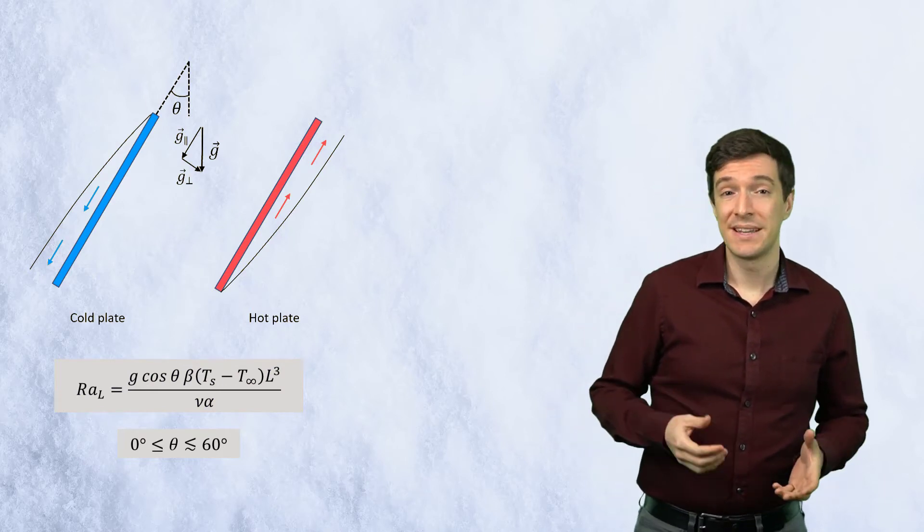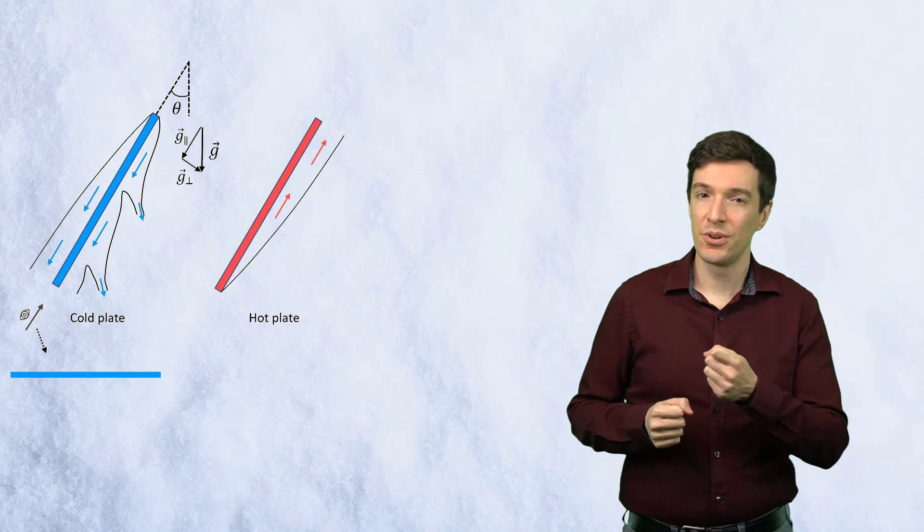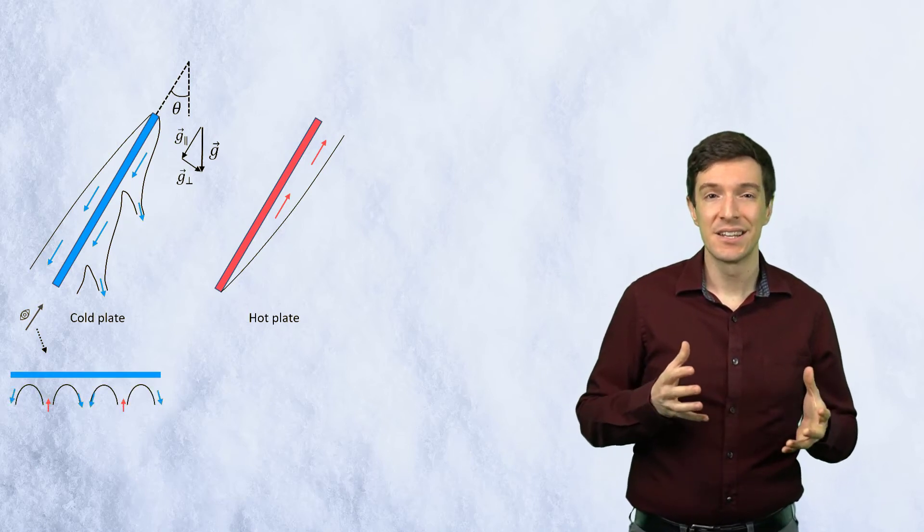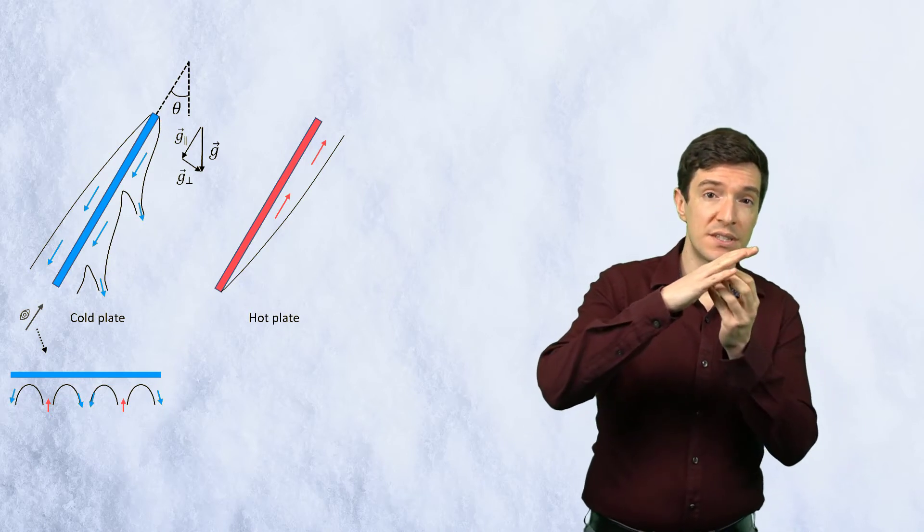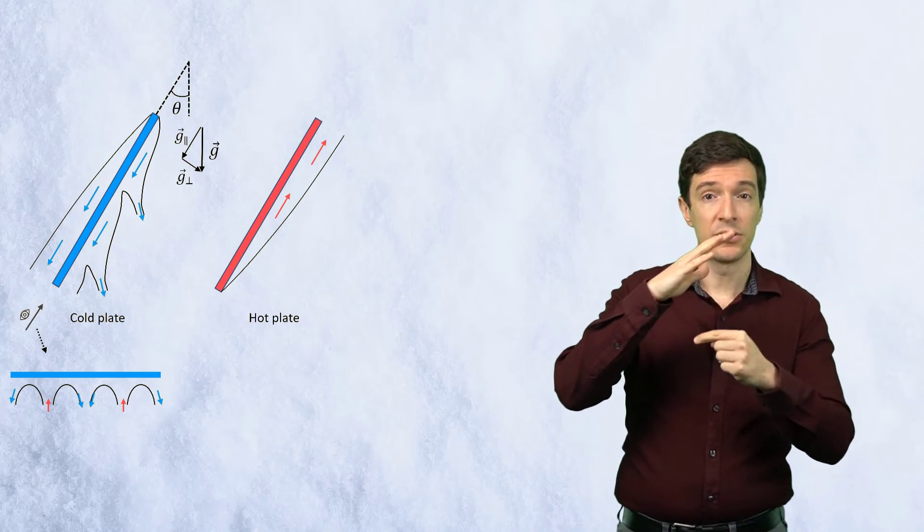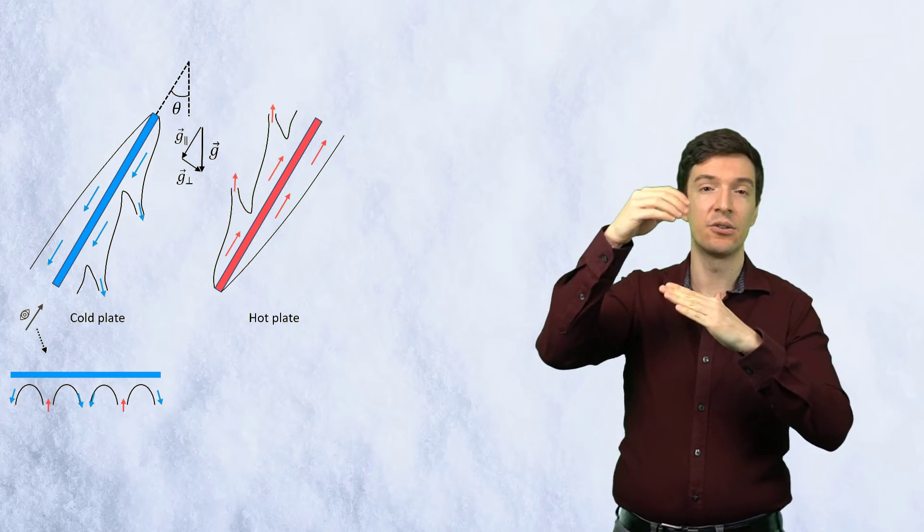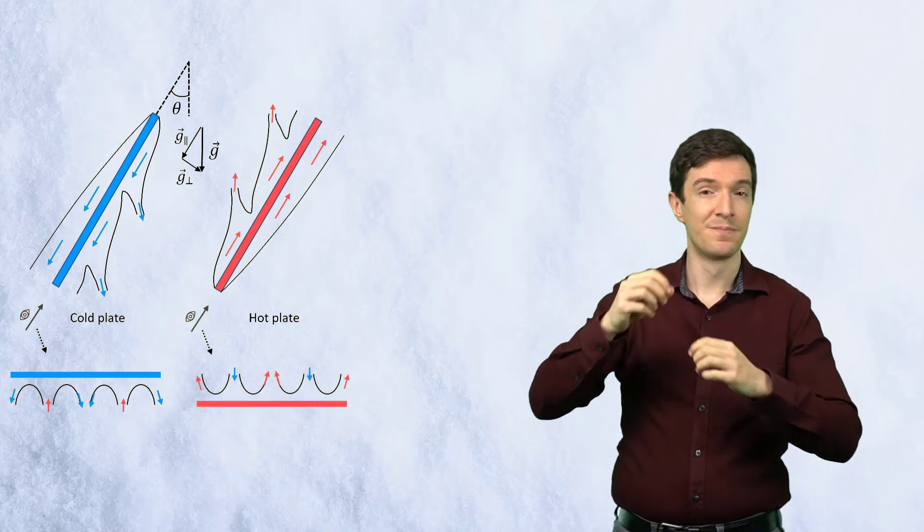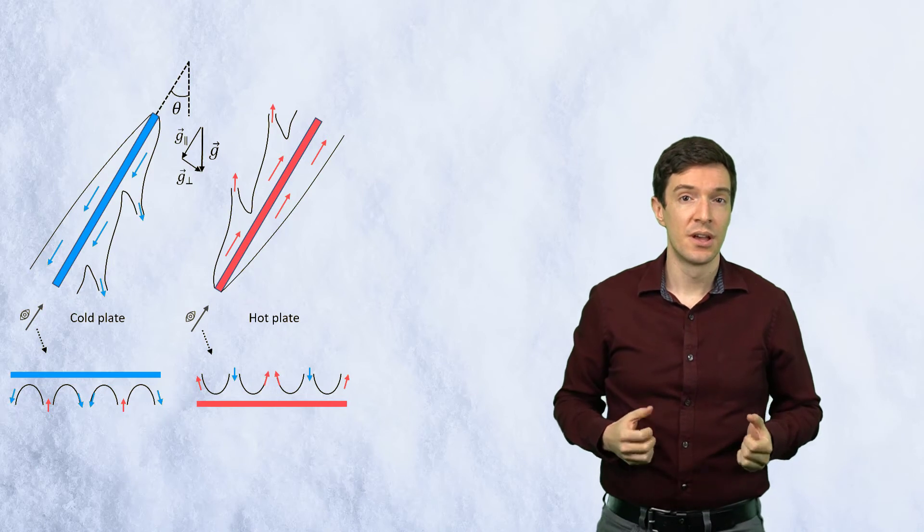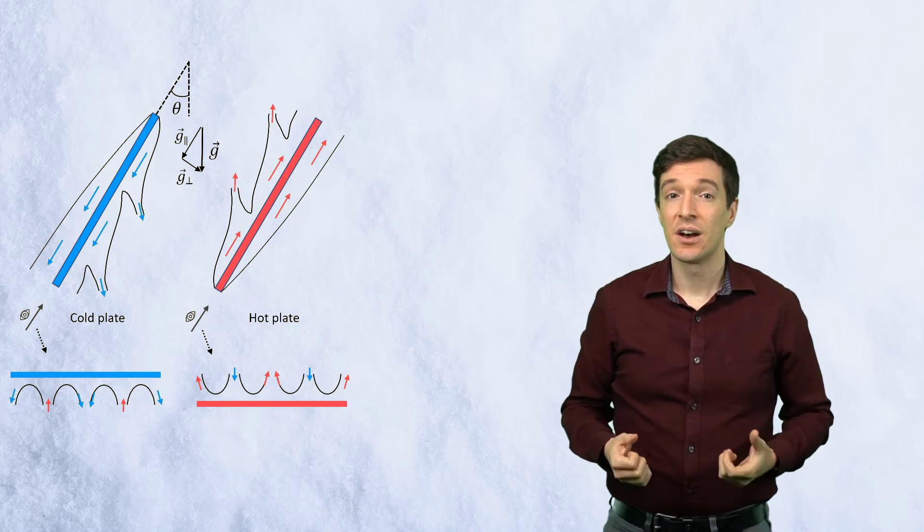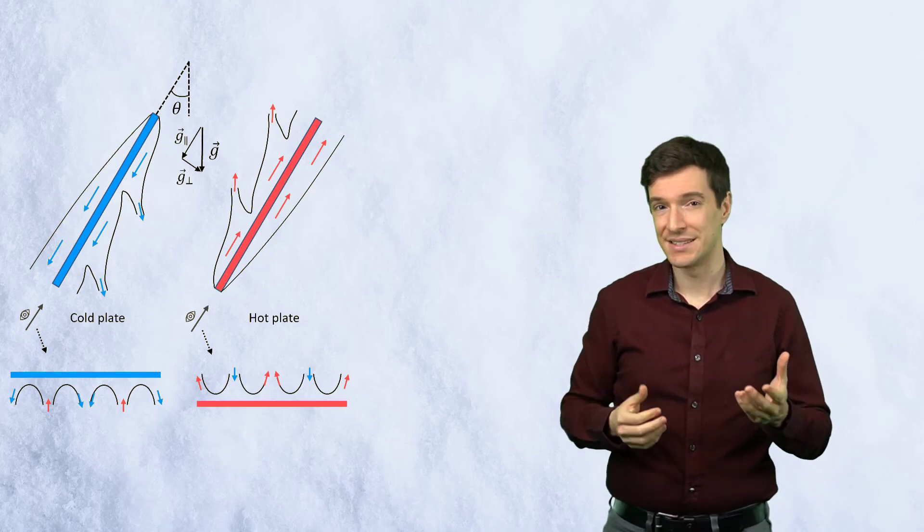On the opposite sides of the plates, instead, the normal component of G pulls the fluid away from the plate and creates three-dimensional patterns. For the cold plate, the fluid moves down and gets replaced by hotter fluid, while for the hot plate, the fluid moves up and the colder fluid replaces it. This motion enhances the heat transfer due to natural convection. Correlations for these sides of the plates can be found in literature on a case-by-case basis.